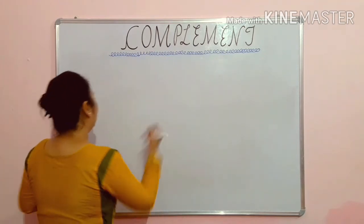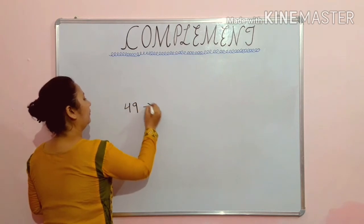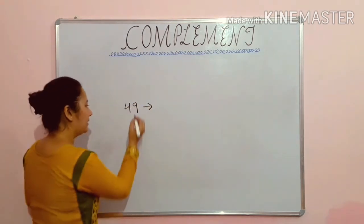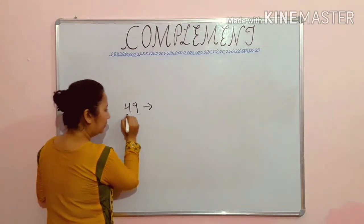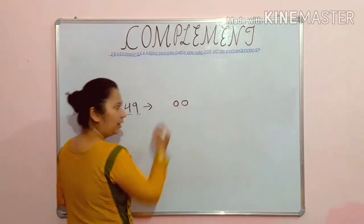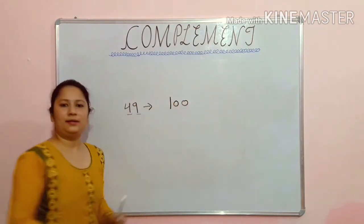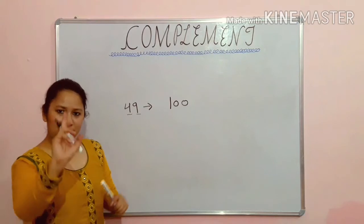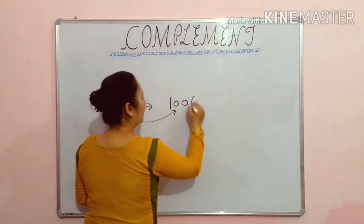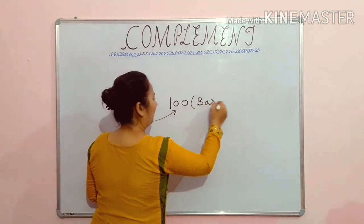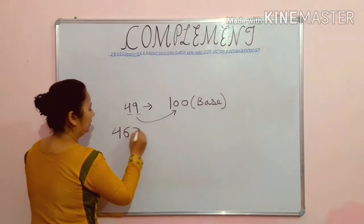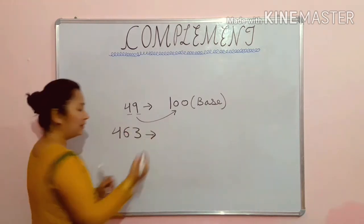If I say your number is 49, what is the base for this number? See — how many digits are there? 1, 2. So how many zeros should there be? 1, 2. And 1 comes first. So your base for 49 is 100. If I say your number is 463, what will be the base?